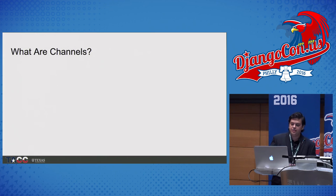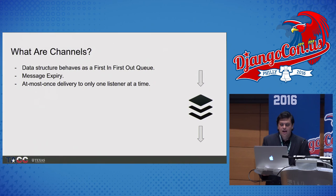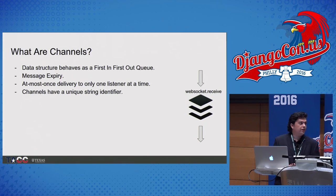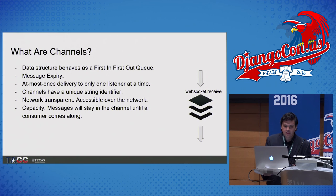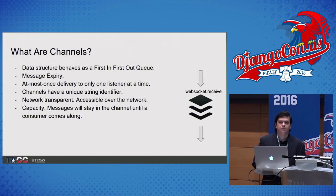What exactly are channels themselves? Channels are basically just data structures that behave like a first-in, first-out queue. They have message expiring and a policy to deliver at most once to one listener at a time — meaning when we put a message into a channel, at most one listener is going to get that message. Channels have a unique string identifier, making it easy to reference one channel in different contexts. They're also network transparent, meaning they can be accessible over the network, so different servers can communicate with each other using Django Channels. And they have capacity — messages stay there until a consumer comes in and grabs the message.